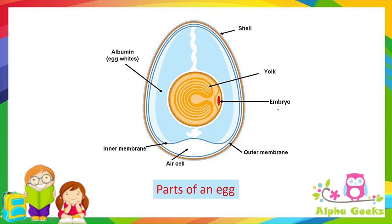Yolk provides food for the growing baby or embryo, and the embryo develops into a chick. Albumin is rich in water and proteins, whereas yolk is rich in fats.